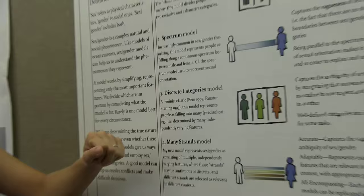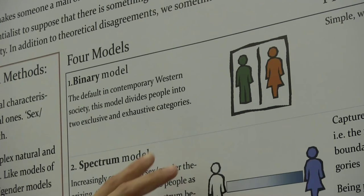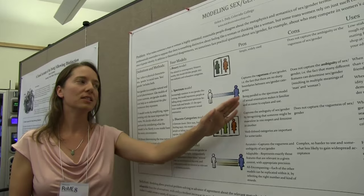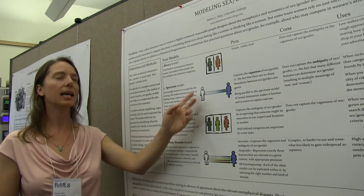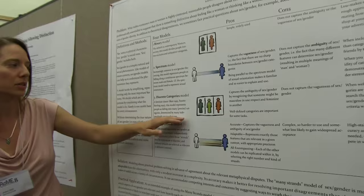The spectrum model is increasingly commonly in use, and the discrete categories one comes up too. Can you say a little bit about what each of those models are? The binary model just divides people up into two exclusive and exhaustive categories, men and women. The spectrum model treats people as falling somewhere on a spectrum with respect to masculinity and femininity — so it's kind of vague, some people can be somewhere in the middle, people vary by degrees. And I think that captures something that the binary model doesn't, so it's an improvement.